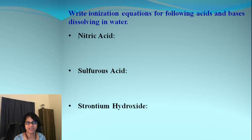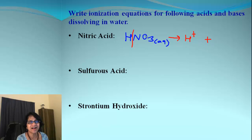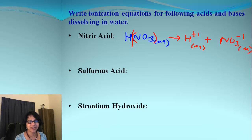Let's take examples for dissociation. Nitric acid is a strong acid. HNO3 is the formula — we always refer to acids as aqueous because they are soluble in water. When the acid dissociates we get hydrogen ion (H+, charge +1) and nitrate ion (NO3−, charge −1), both written as aqueous.